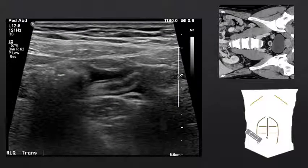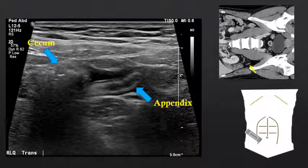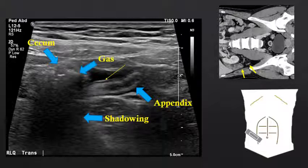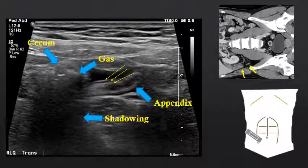As we continue to ultrasound the right lower quadrant, another portion of the bowel comes into view — the appendix. The appendix is going to arise from the cecum. In this case, the cecum is gas-filled or stool-filled, and there is shadowing deep to the cecum. Notice the characteristic three-layered wall of the appendix, and in this case the appendix is slightly outlined by hypoechoic fluid, which makes it easier to identify.